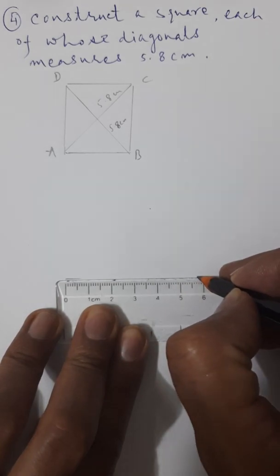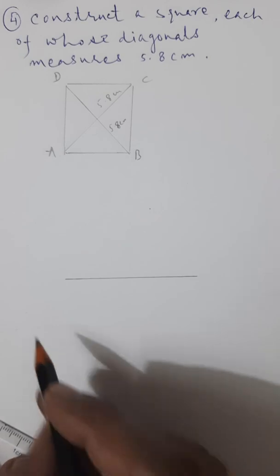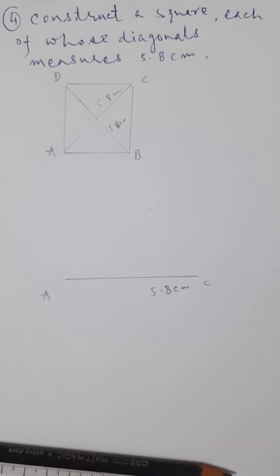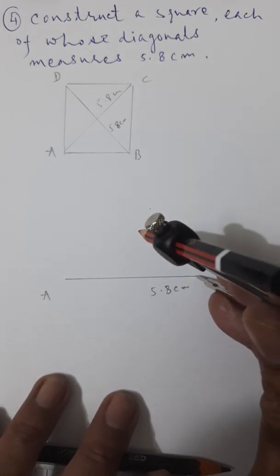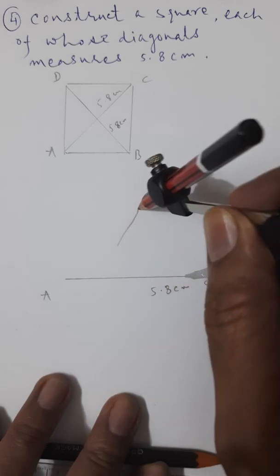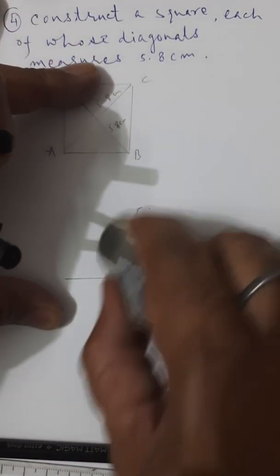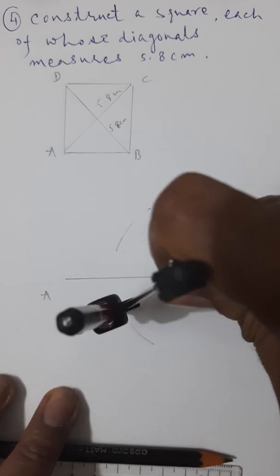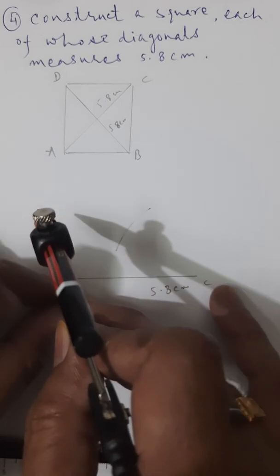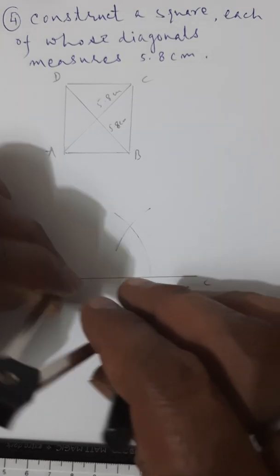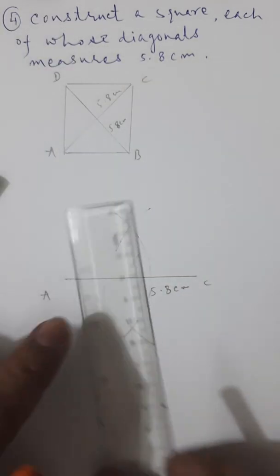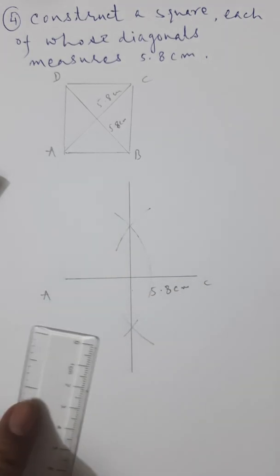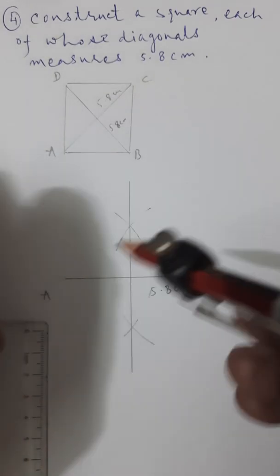Simply draw one diagonal of 5.8 centimeters. This is AC, one diagonal of 5.8 centimeters. Now we will make the perpendicular bisector of AC — expand the compass more than half of AC. This is the perpendicular bisector.